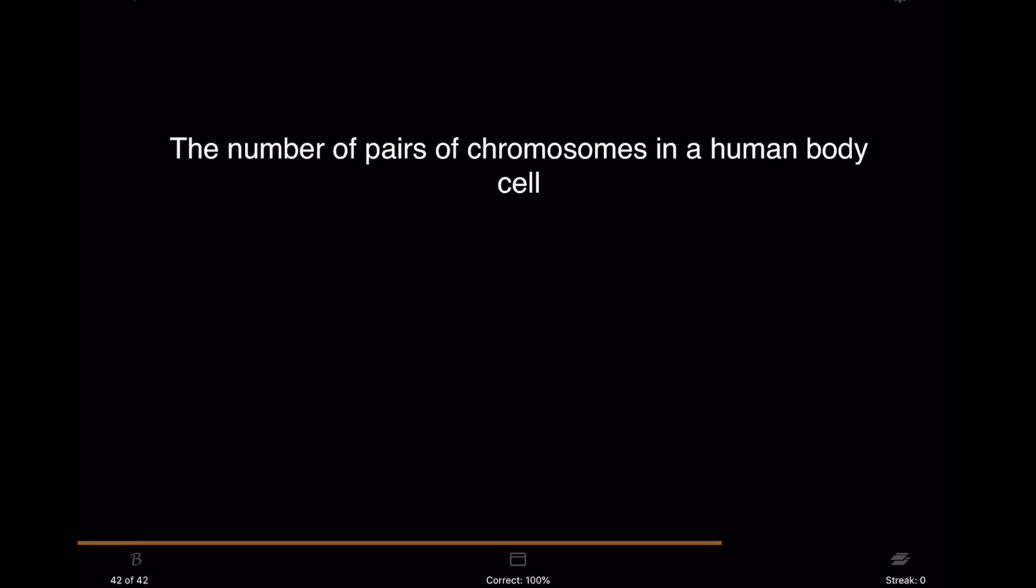The number of pairs of chromosomes in the human body cell is 23.